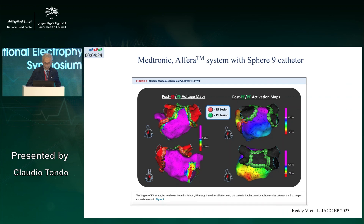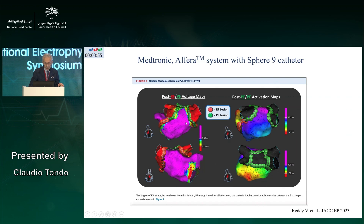Regarding upcoming PFA technologies: the Medtronic Atea is a 9 mm spherical catheter that provides switching between RF and PFA. In this system, RF lesions are shown in red and PFA lesions in green. The authors applied PFA at the posterior wall because it's safer, and switched to RF at the anterior wall. My comment is: if you have PFA, why not use it everywhere, since it's safer and may achieve equally effective lesions?